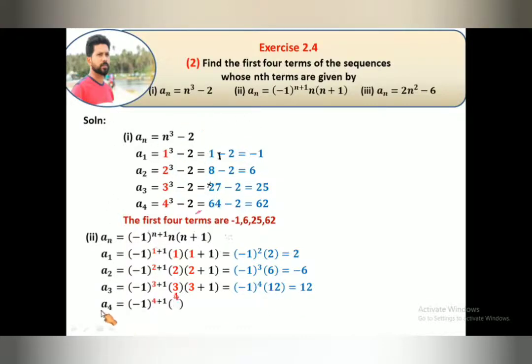Then fourth term, (-1)^5, n = 4, so this is also 4 + 1 equals 5, 5 · 4 equals 20. Power is an odd number and answer is minus. So the first four terms are 2, -6, 12, -20.